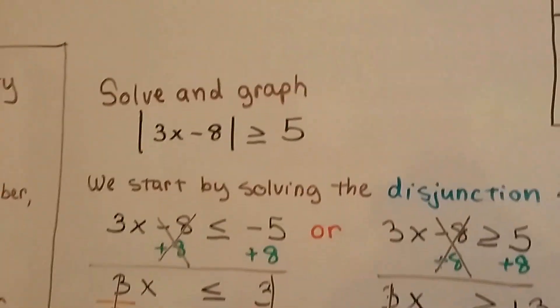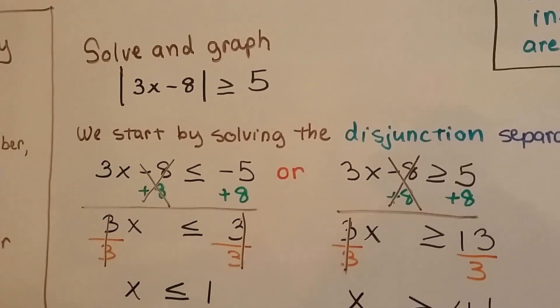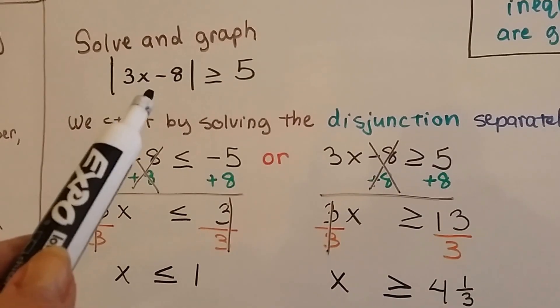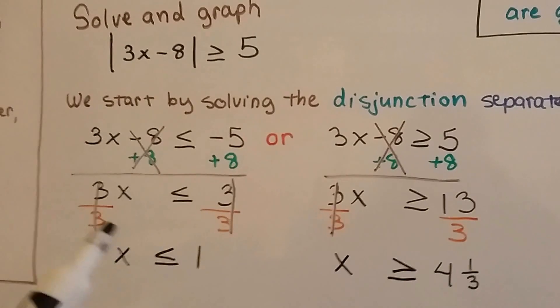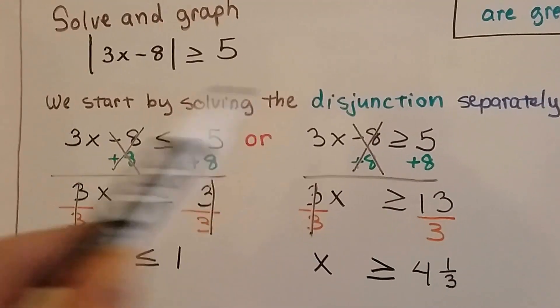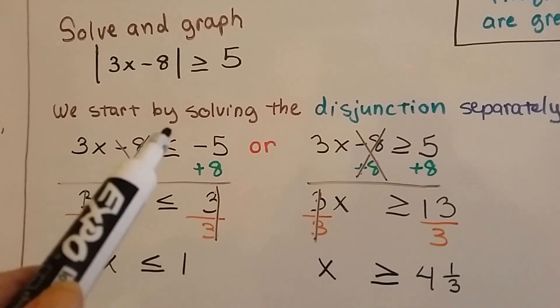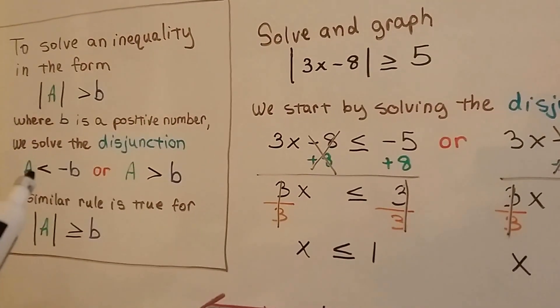So, it says to solve and graph the absolute value of 3x minus 8 is greater than or equal to 5. So because it's the absolute value of this, we know that it could be a positive 5 or a negative 5. So we start by solving the disjunction separately.